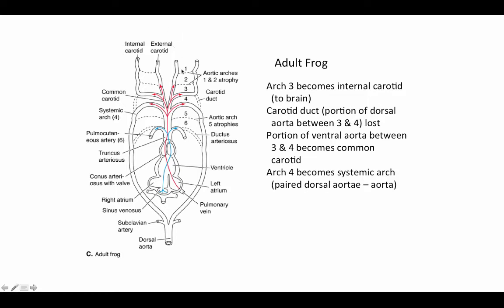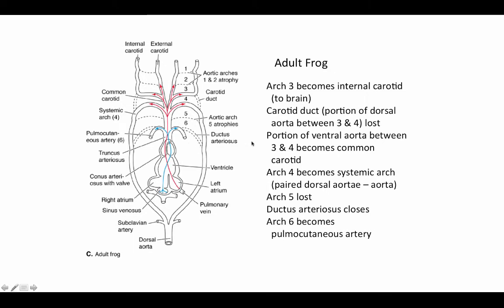Arch six continues to give rise to the pulmonary circuit. In amphibians, arch six becomes an artery called the pulmo-cutaneous artery — its biggest branch goes to the lungs, and it also gives off a branch that spreads out just beneath the skin for cutaneous respiration, taking in oxygen through the skin and converging back into the pulmonary veins to bring oxygenated blood back into the heart to be repumped. In adult frogs, the ductus arteriosus — the connection in arch six between the pulmonary artery and the dorsal aorta — closes and becomes a little ligament called the ligamentum arteriosum.